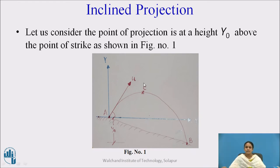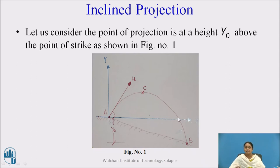We have already seen the projection of a projectile on a leveled ground surface, where the starting point and the strike point are at the same level. In that case, the horizontal range is calculated by u·t — initial velocity into time required to reach from point A to point B — and the maximum height is given by ½g·t².